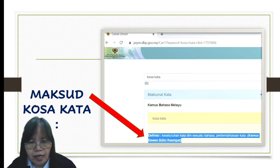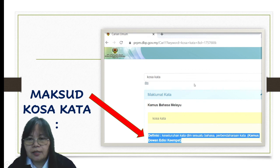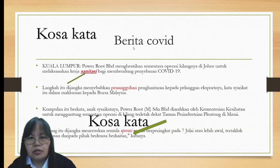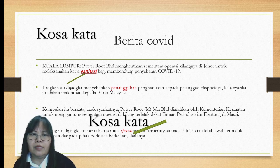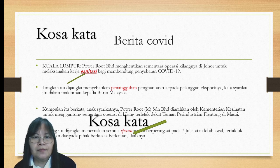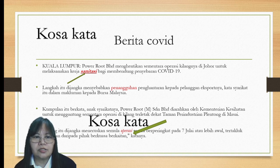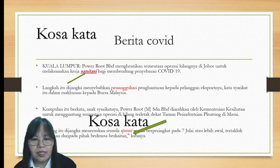Apa yang dimaksudkan dengan kosa kata? Kosa kata merujuk kepada Kamus Dewan Edisi Keempat, iaitu merupakan keseluruhan kata dalam sesuatu bahasa ataupun perbendaharaan kata baharu. Cikgu ambil contoh berita COVID di mana dalam perenggan pertama berbunyi: Kuala Lumpur berhak menghentikan sementara operasi kilangnya di Johor untuk melaksanakan kerja sanitasi bagi membendung penghebaran COVID-19. Perkataan 'sanitasi' merupakan kosa kata baharu sebab anda mungkin tak pernah jumpa perkataan tersebut ataupun tidak tahu maksudnya. Begitu juga perkataan 'penangguhan' dan 'operasi' merupakan kosa kata kalau anda tidak tahu maksud perkataan tersebut.